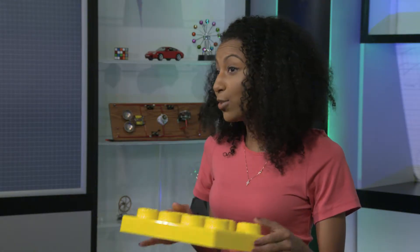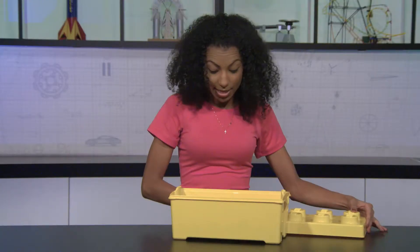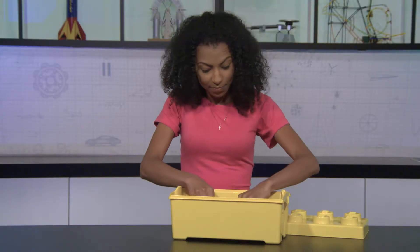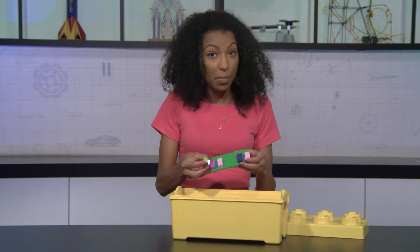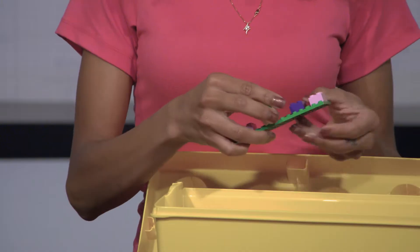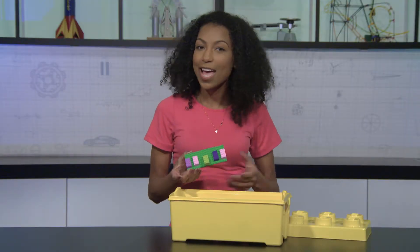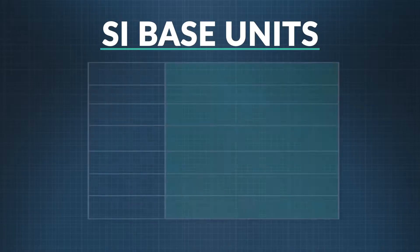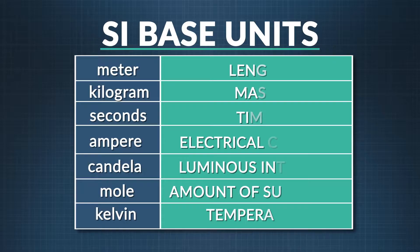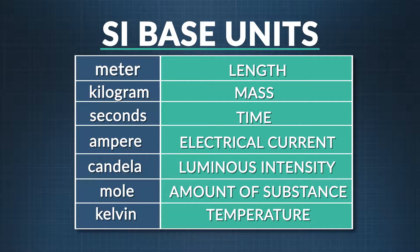You know how Legos have units that you can build on? So does the SI. They're called base units, and there are seven of them: meter, kilogram, seconds, ampere, candela, mole, and kelvin.